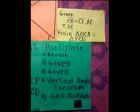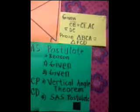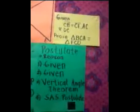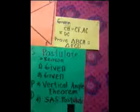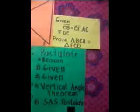I'm Marjorie Otoman and Jordan Diesel, and we will discuss the SAS postulate. This is the figure of SAS. The given of the SAS postulate: CB is congruent to CE, and AC is congruent to DC. The proof of the SAS postulate: triangle BCA is congruent to triangle ECB. SAS postulate stands for side-angle-side.